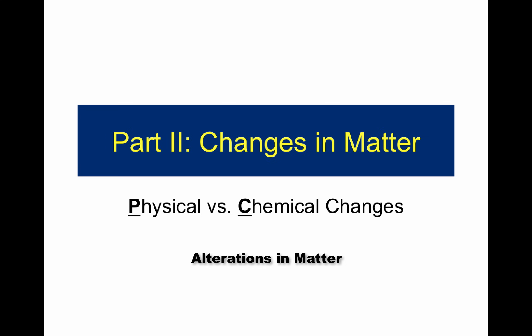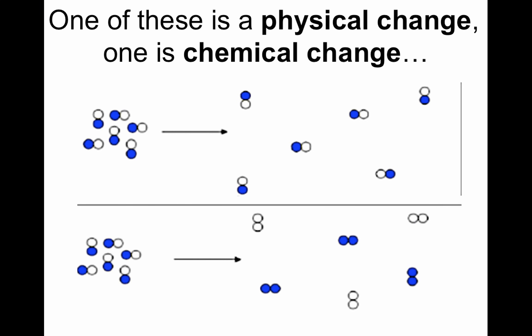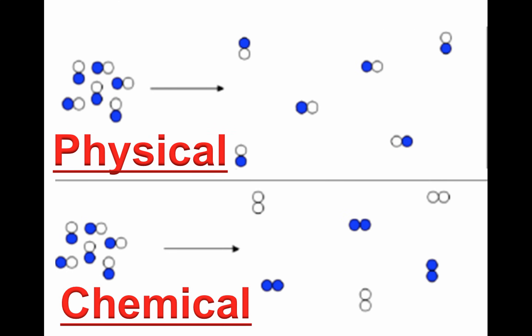The second half of this video deals with changes in matter — specifically physical changes versus chemical changes. Matter can change in two ways: either in its appearance or its identity. One of these changes is an alteration in simply the appearance of matter, and one is an alteration in the identity. You have to look closely at the particles to know what's happening. The top one is a physical change and the bottom is a chemical change.